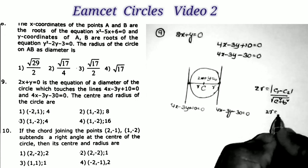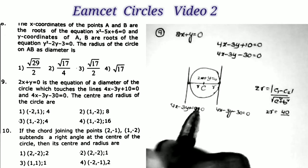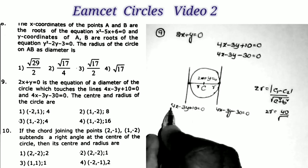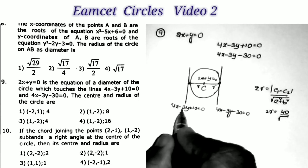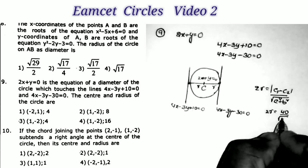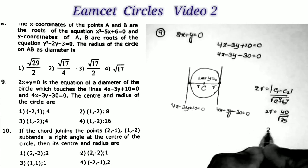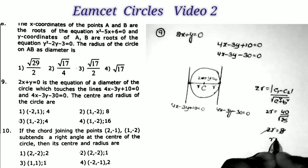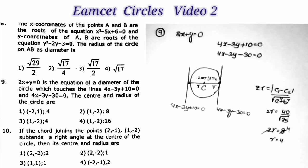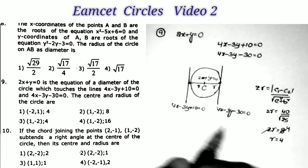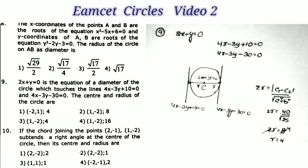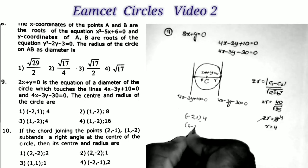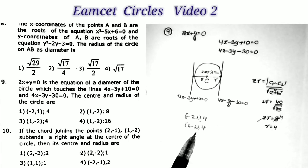Here c₁ = 10, c₂ = −30, so |c₁ − c₂| = 40. With a = 4, b = −3, we get √(16 + 9) = √25 = 5. Therefore 2r = 40/5 = 8, giving r = 4. Checking the options, the first and third options both have radius = 4, so the answer is either the first or third option.